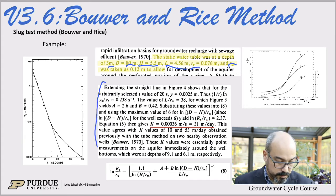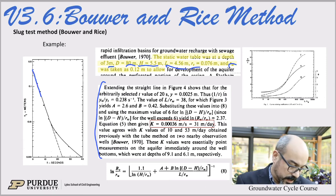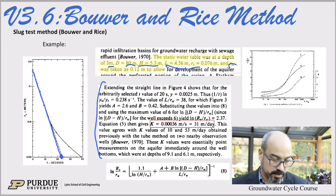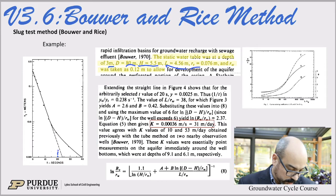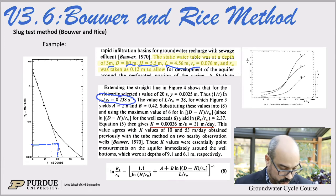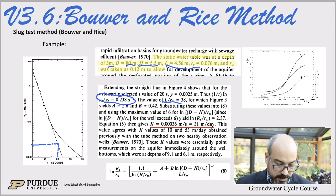If you look at the data on the left-hand side and extend the straight-line part to the intercept, you find about 25 seconds. If you read at 20 seconds and regress, you get approximately 0.0024. Now, l over rw is 38 — that is given — so you have that value.